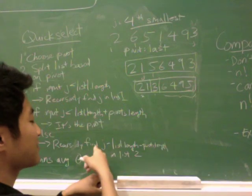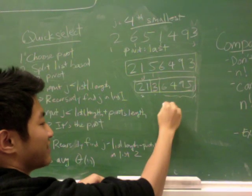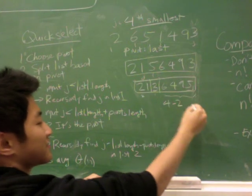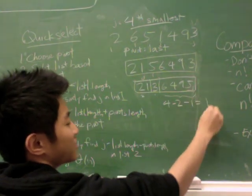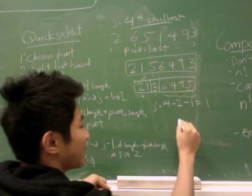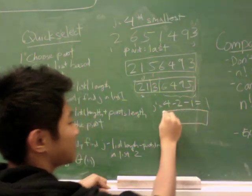And we have to recursively find j, which is four, minus list one dot length, which is two, minus pivots dot length, which is one. So j, our new j prime is equal to one. And our new list is six, four, nine, five. So we do this here.